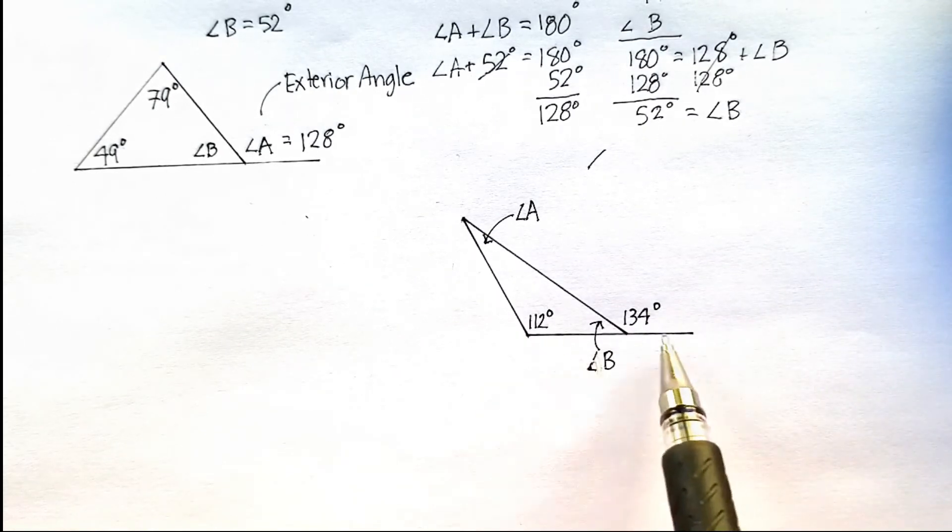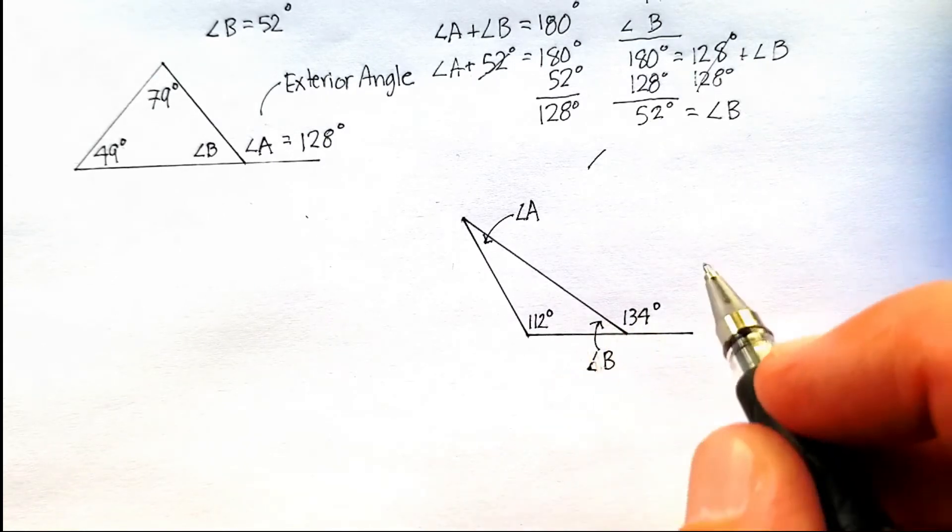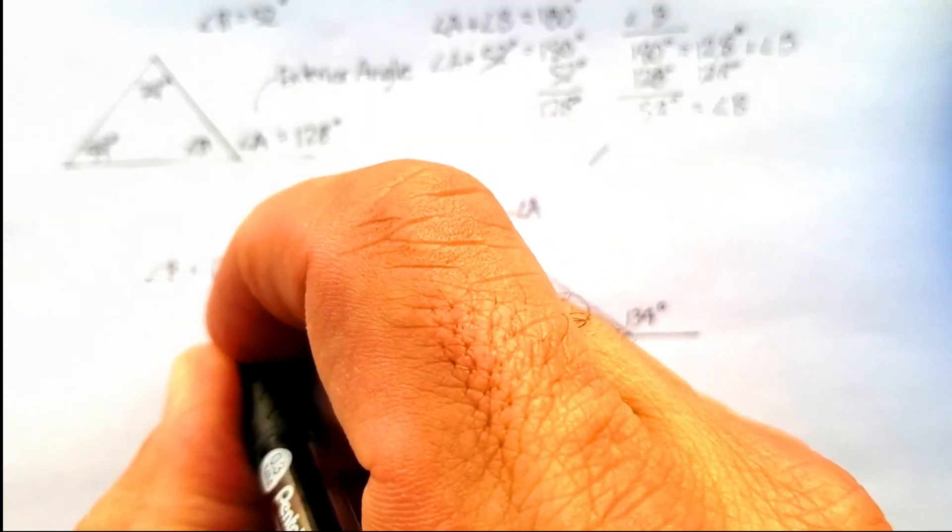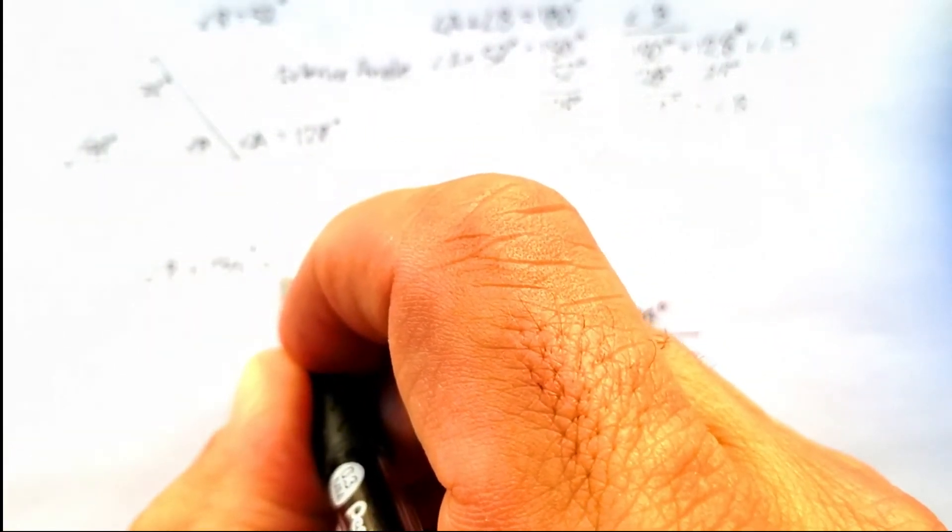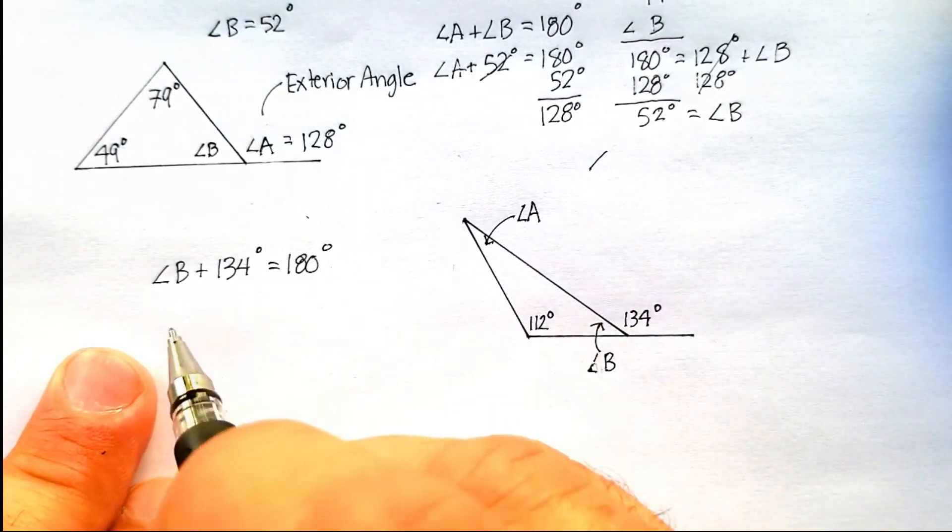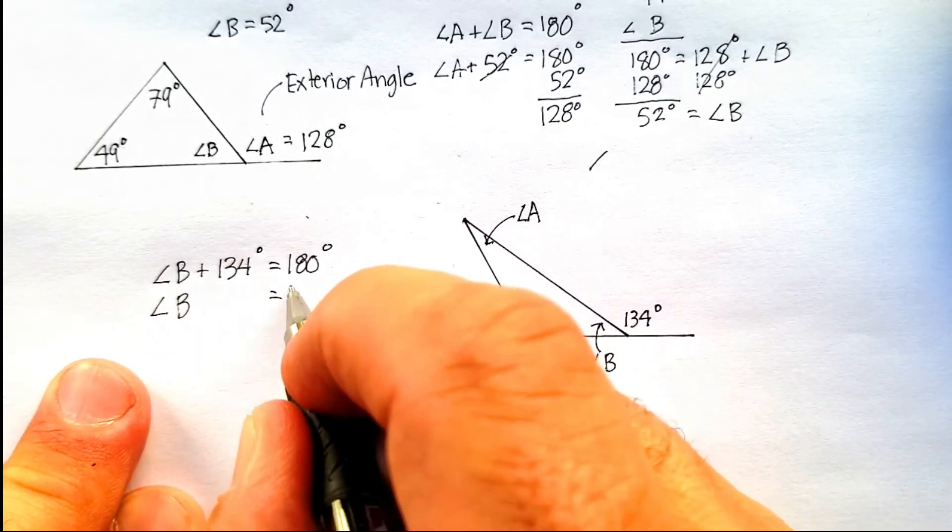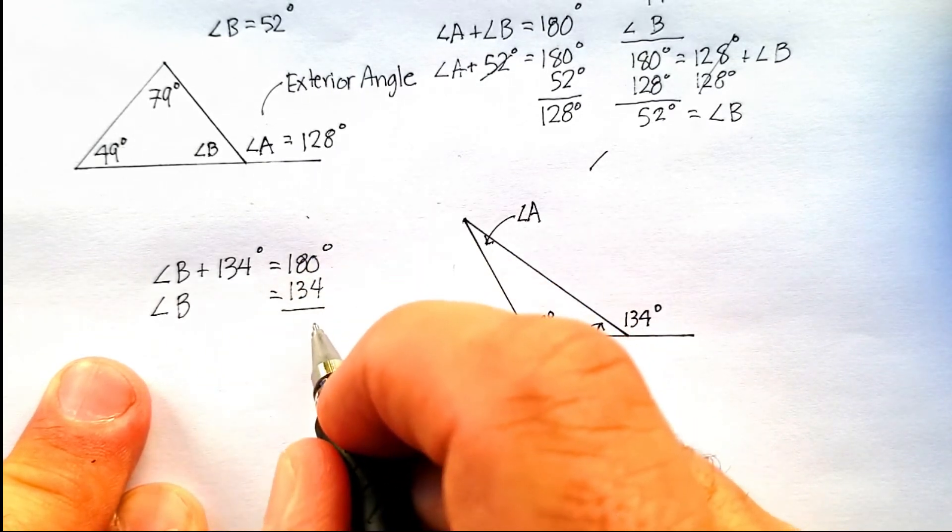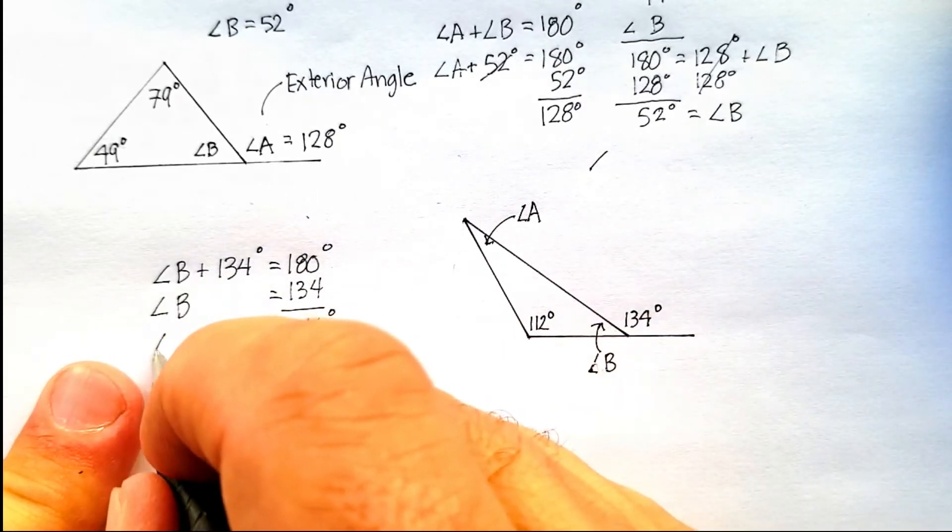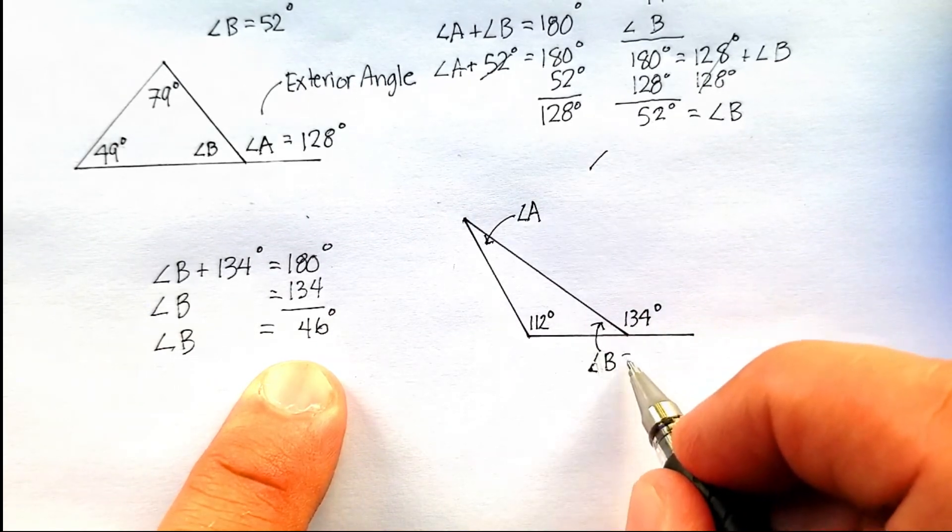Now again, I know from the straight line that 180 degrees should be equal to this angle B plus 134. So I'm going to say angle B plus 134 should be equal to 180 degrees. Let's subtract 134. That's a 6, that's a 7, that's a 4. So that means that angle B should be equal to 46 degrees.